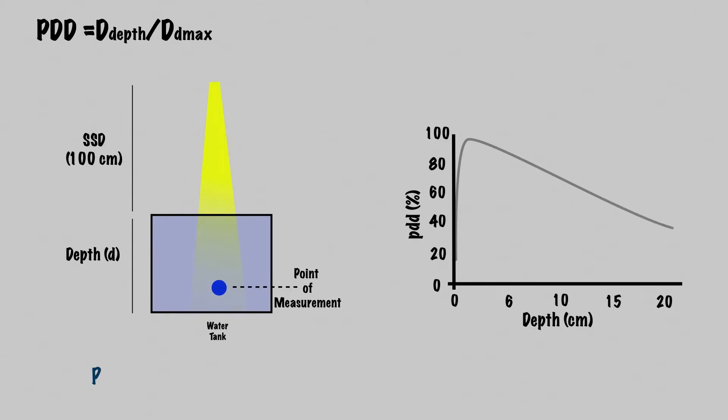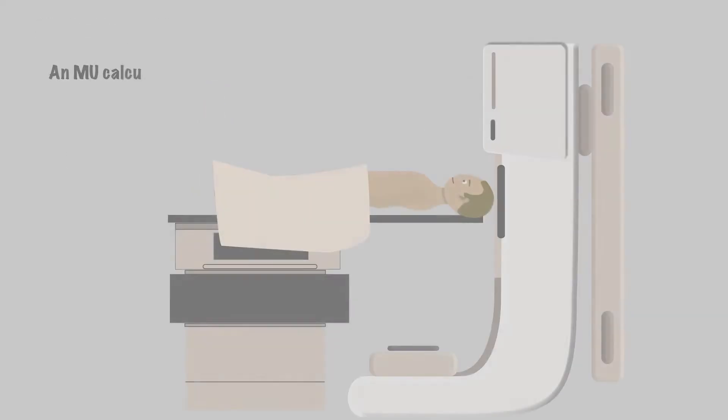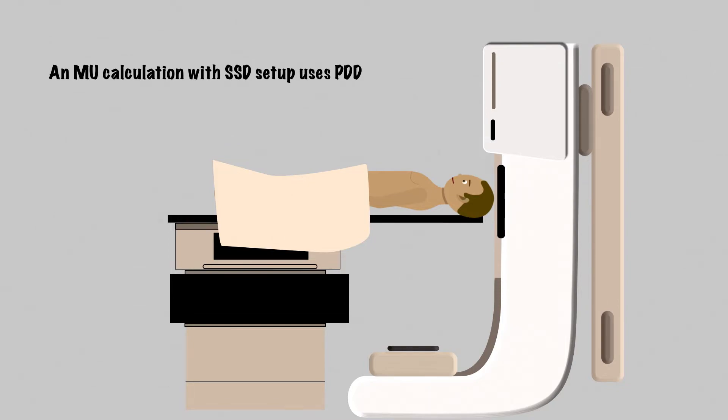These values are calculated by physicists for each machine and beam energy, which can be found in your clinic's lookup tables. An MU calculation with SSD setup uses PDD.